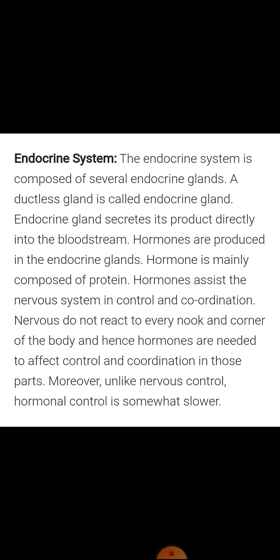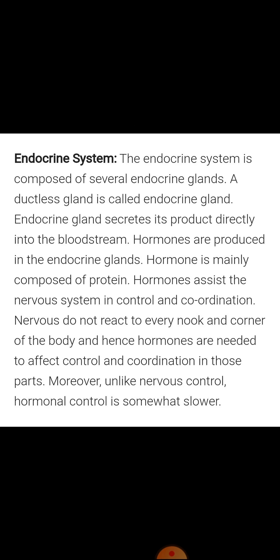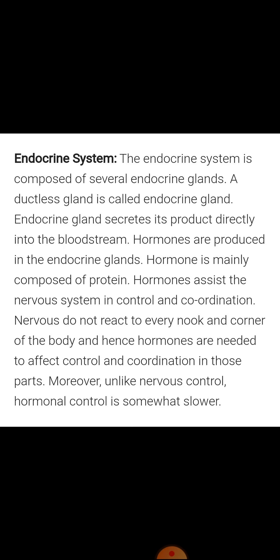Now the next type is endocrine glands, which is what we have to study. These glands do not have a duct. A gland which does not have a duct is known as an endocrine gland. Since they have no duct, whatever they secrete is directly poured into the bloodstream and through the blood it reaches different organs. Endocrine glands are also called ductless glands because they don't have any duct.